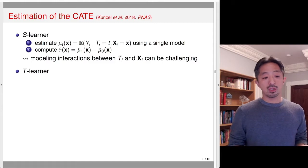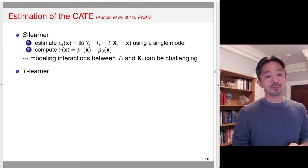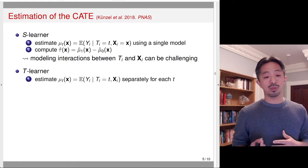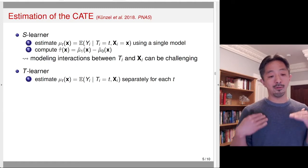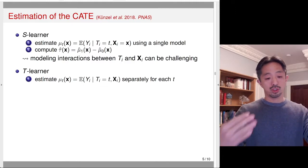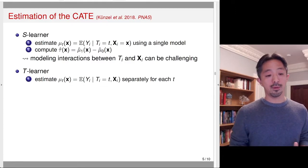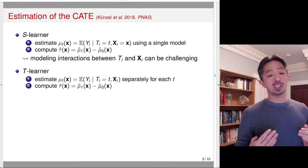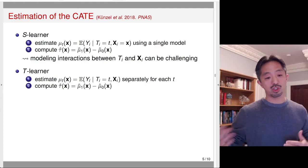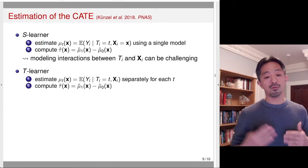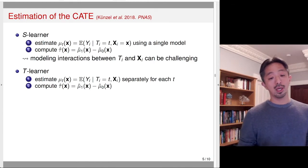Alternatively, you can use something called T-Learner. T-Learner estimates the conditional expectation function separately for each group. You fit the machine learning model to the treatment group and the control group separately, and then compute the difference between the two. So instead of using a single model with interactions, T-Learner fits a separate model for the treatment group and control group, and then takes the difference.